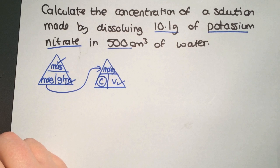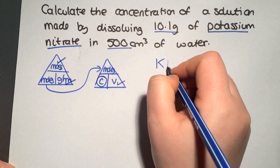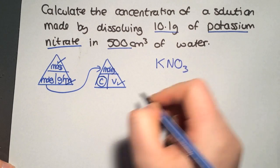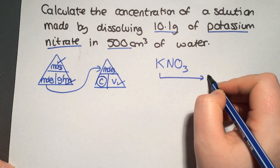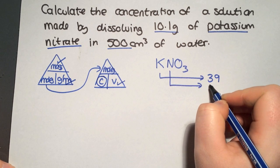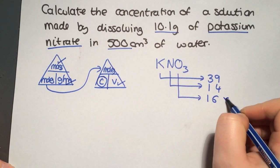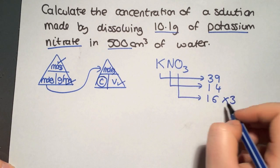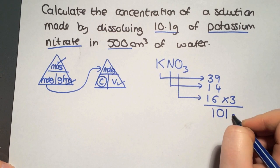Our first step is to work out the gram formula mass. Potassium nitrate is KNO3. K has a relative atomic mass of 39, nitrogen 14, and oxygen is 16 multiplied by 3, giving you a gram formula mass of 101 grams per mole.